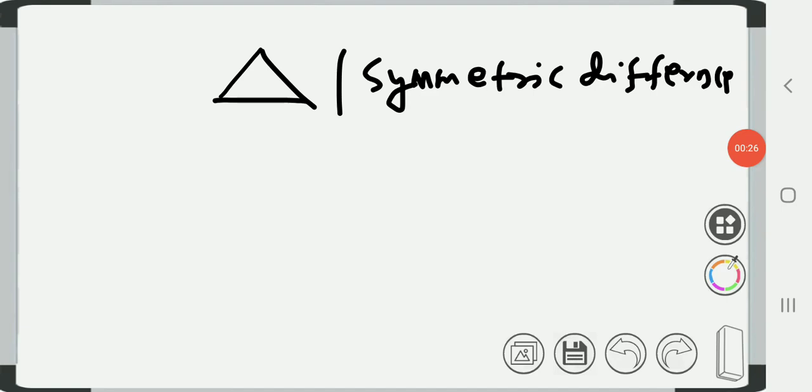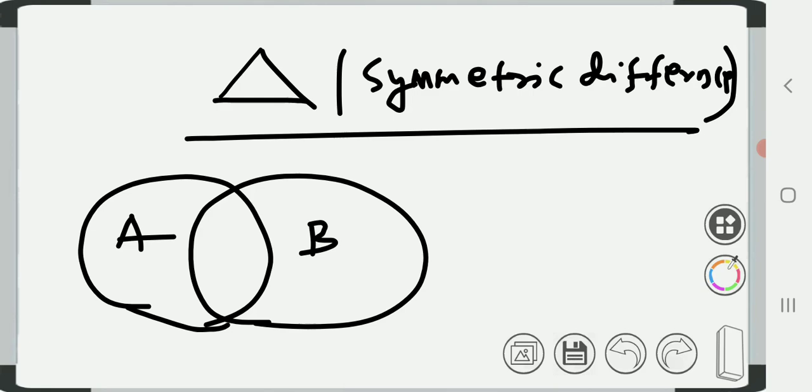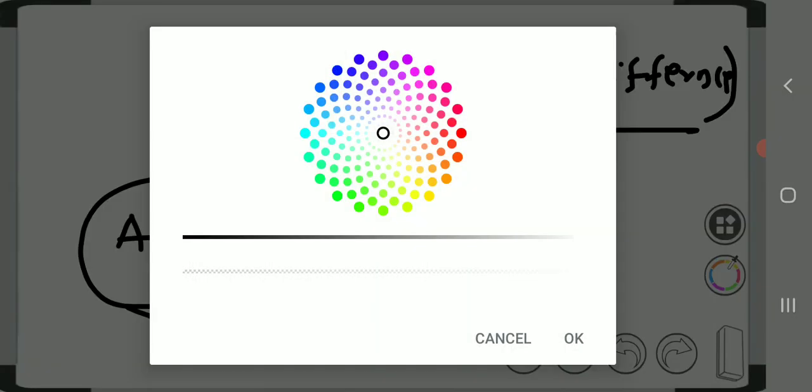So what is symmetric difference? Let's understand. Suppose there is a set A and this is a set B. Set A and set B, the elements present in symmetric difference A delta B stand for, look at this...